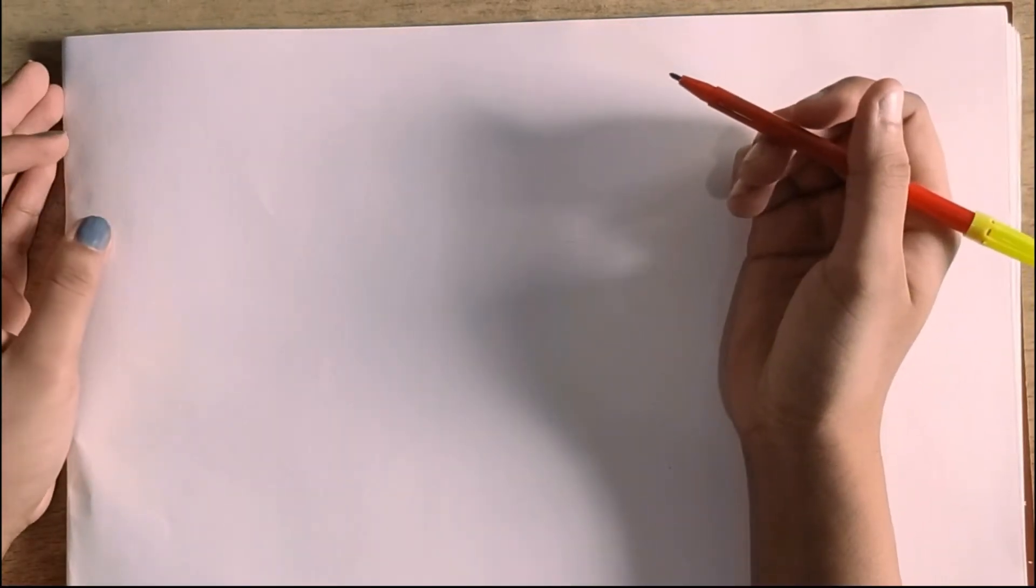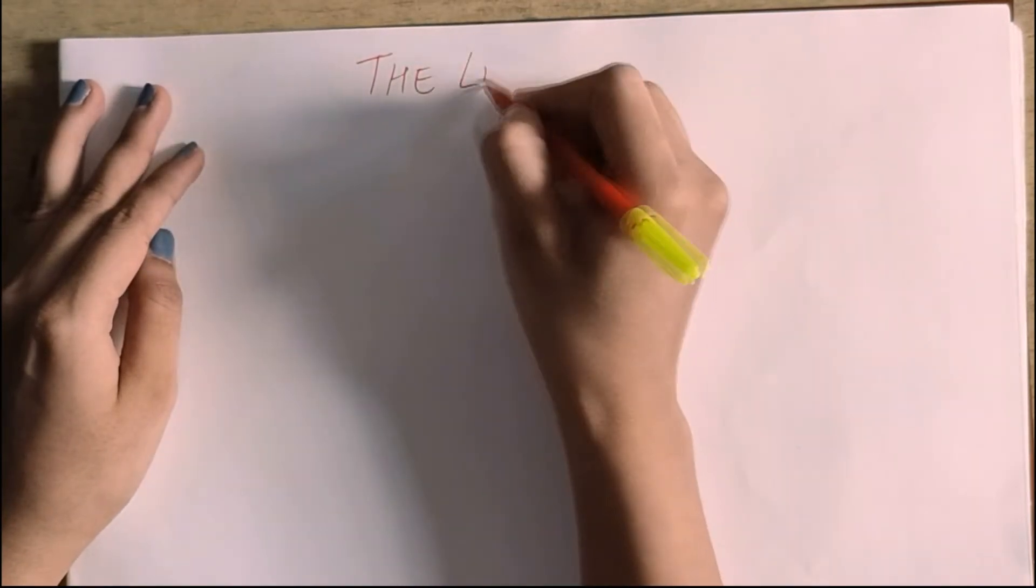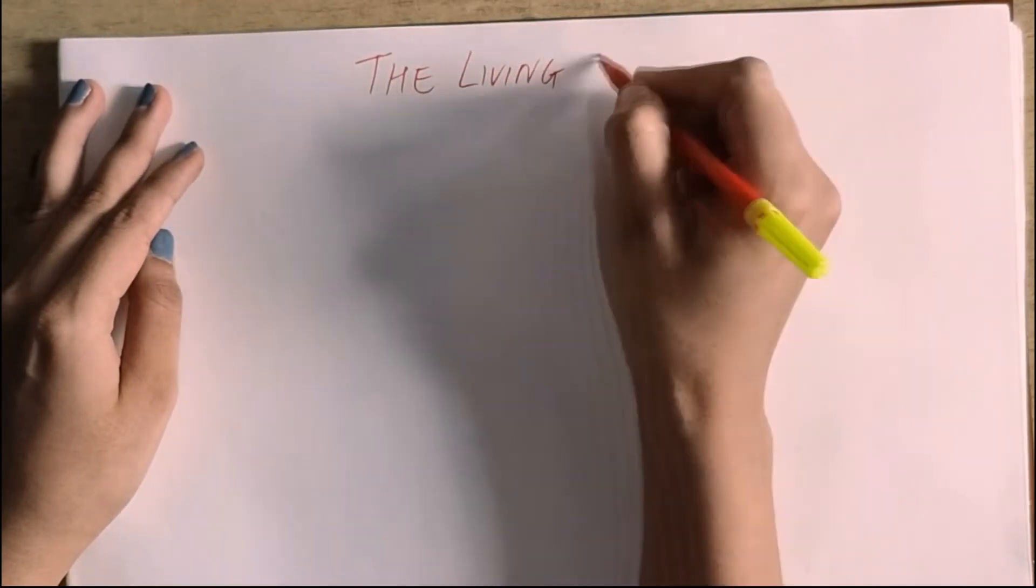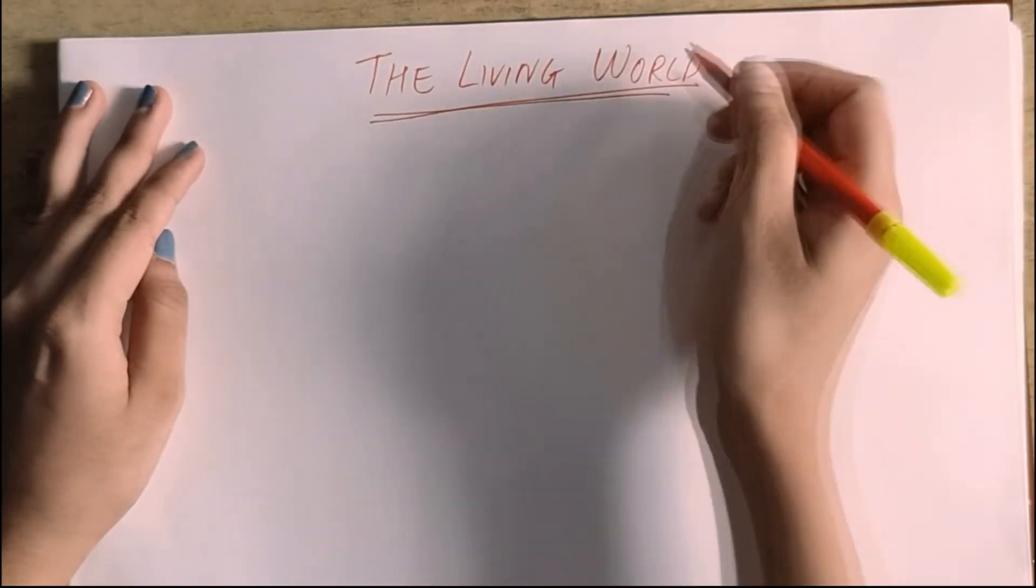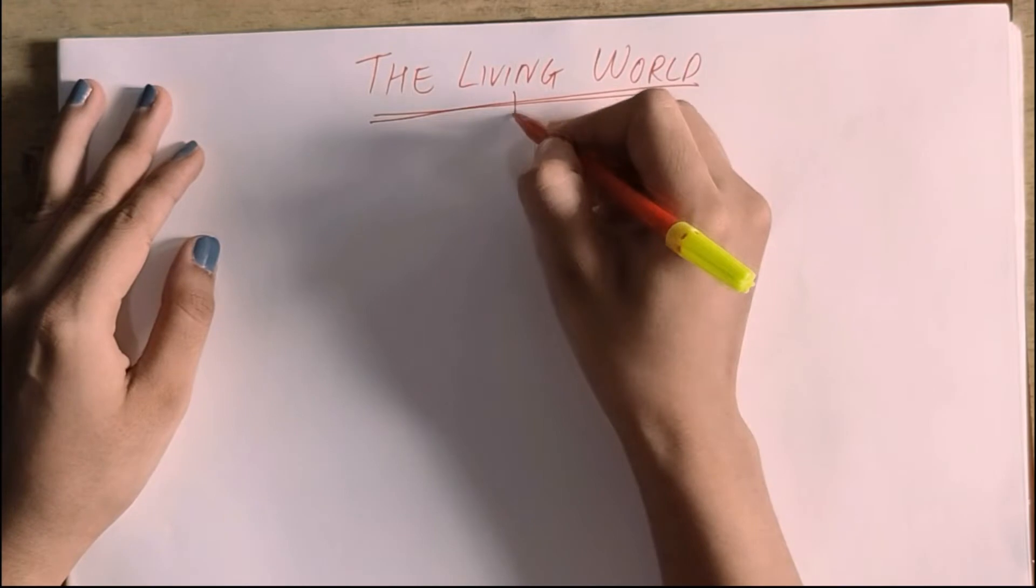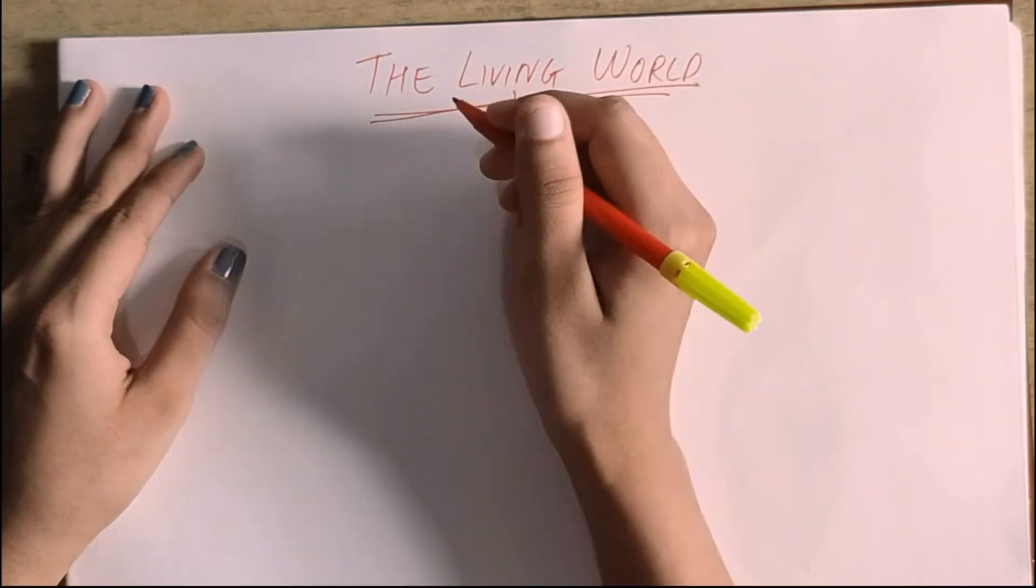Hello everyone, so today we will start here in the first chapter, the living world. So what do you mean by living? What does living mean? Living means a species that is living. But if we have to define it, then we can say that any organism or species that shows the characteristics.